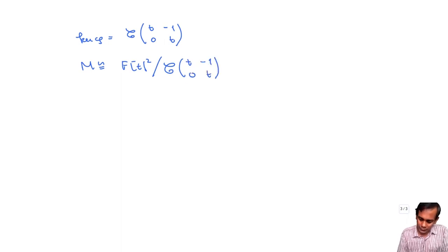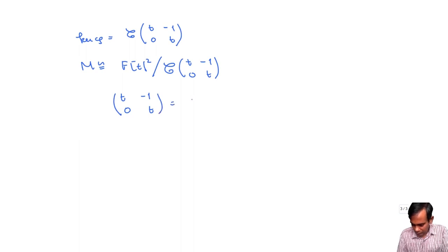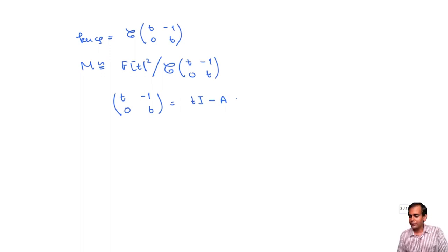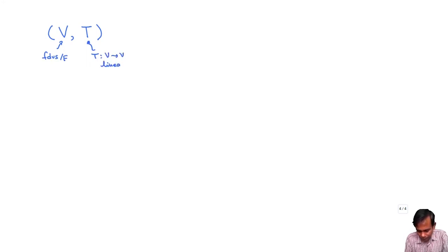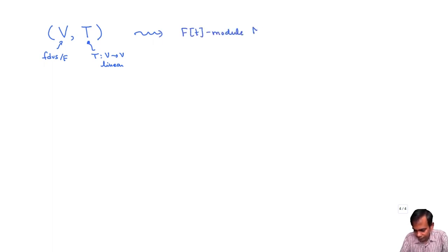This is going to be a phenomenon which holds in general. More generally, let's fix a finite-dimensional vector space V over a field F and a linear operator T, meaning T is a linear map from V to V. To this data you can associate an F[T]-module M_T. As an additive abelian group, M_T is just V, and the action of a polynomial P(T) on a vector v is obtained by evaluating P at the linear operator T and applying the resulting operator to v.